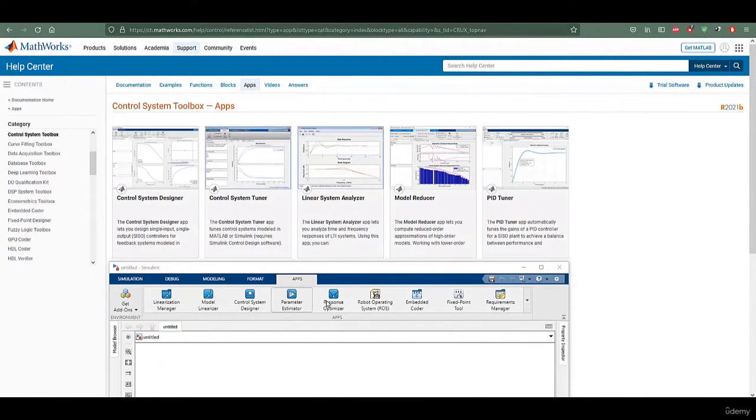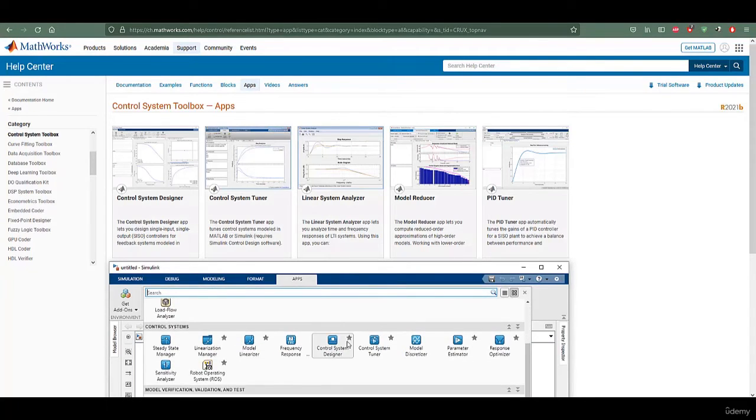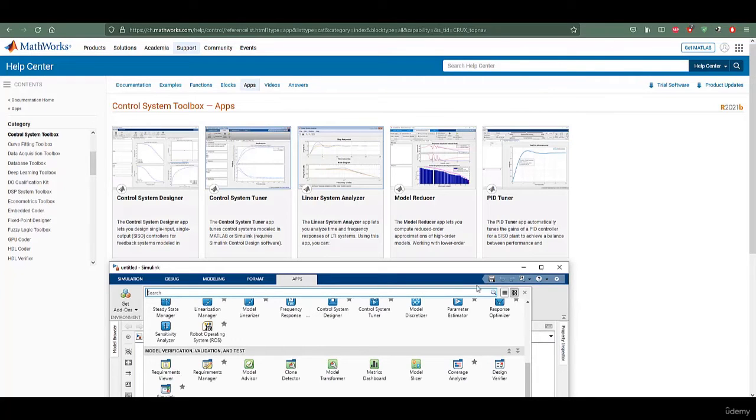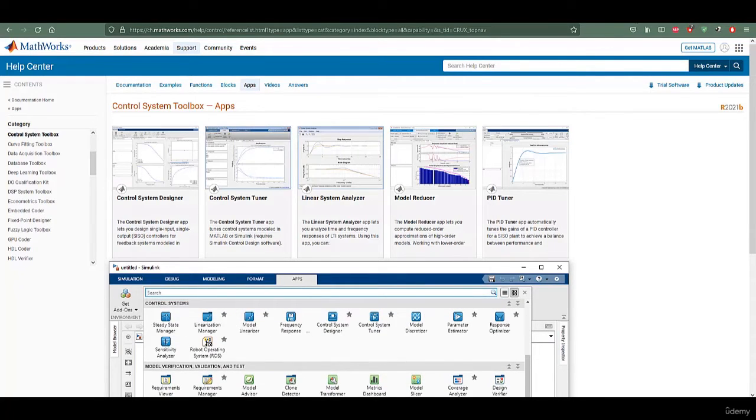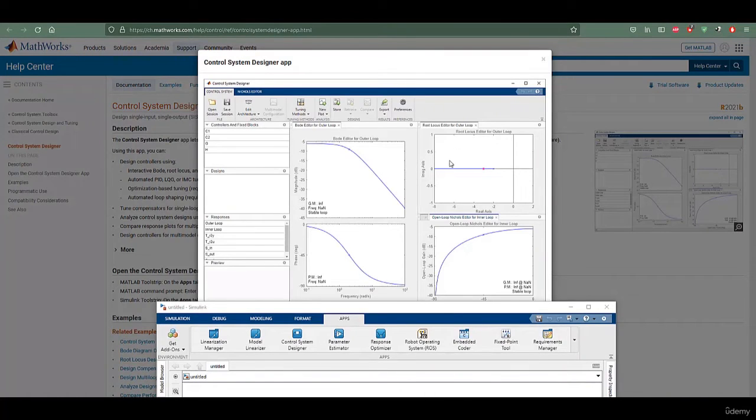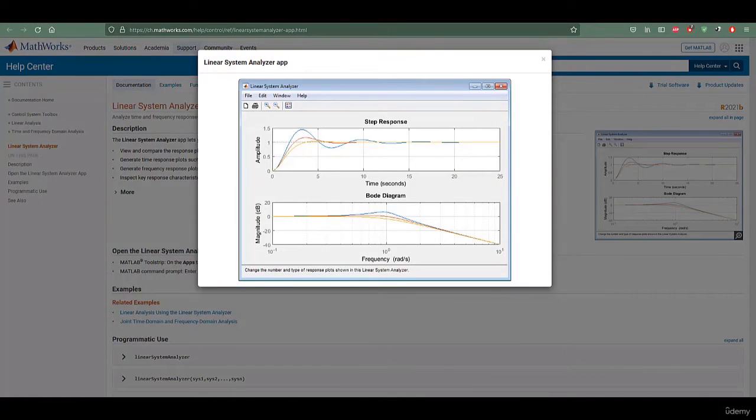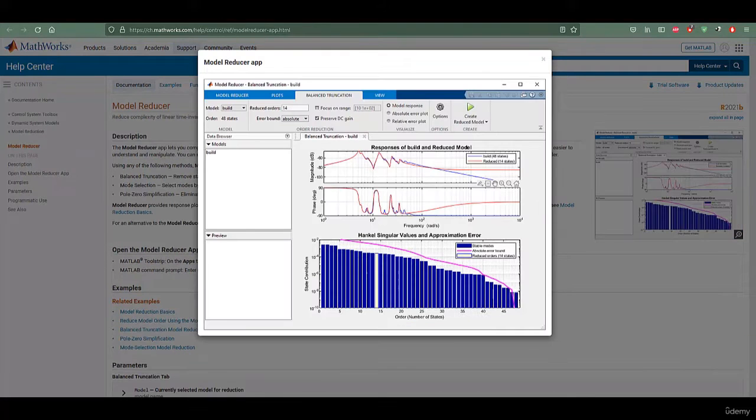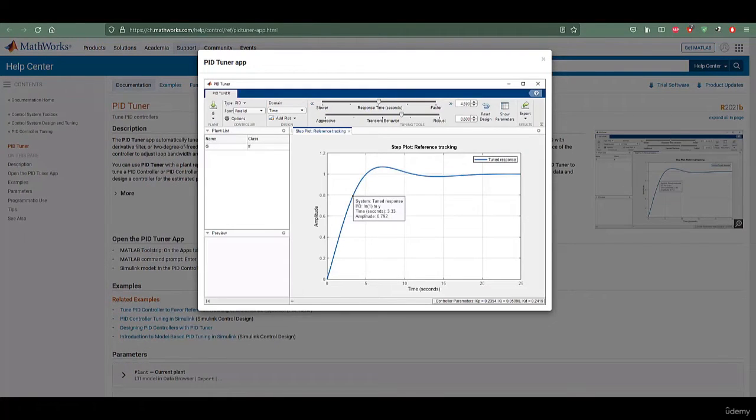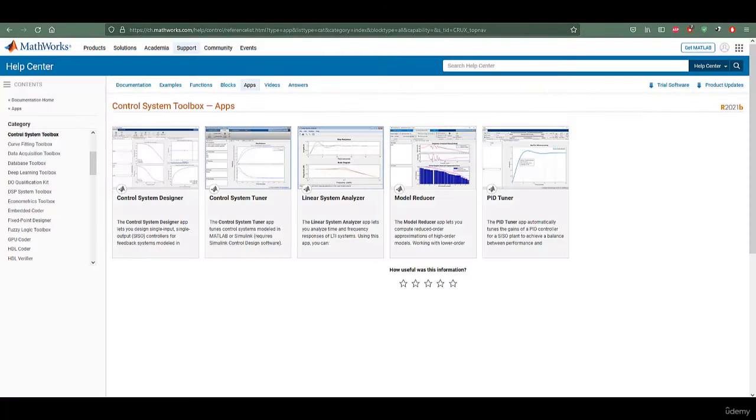The control system toolbox is a collection of algorithms, mainly written as M-files, that implement common techniques of design, analysis, and modeling of control systems. Its wide range of services includes classical and modern methods of control design, including root locus, pole placement, and LQG regulator design. Certain graphical user interfaces simplify the typical tasks of control engineering. This toolbox is built on the fundamentals of MATLAB to facilitate specialized control systems engineering tools. Therefore, the second prerequisite for this course is to have a basic knowledge of MATLAB Simulink.